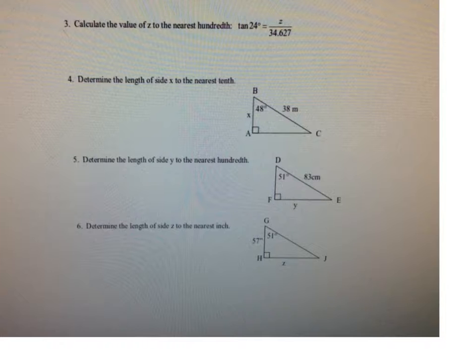So if we have a look at number four, if you identify the sides according to the angle that you're given, then this side over here, the X, is side adjacent and the 38 is the hypotenuse, and so we're dealing with the cosine ratio.